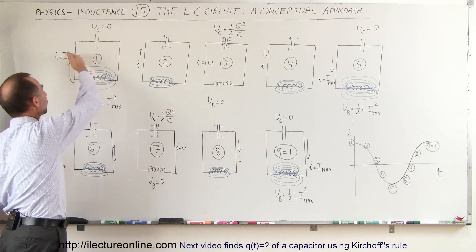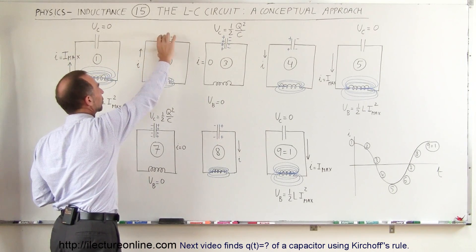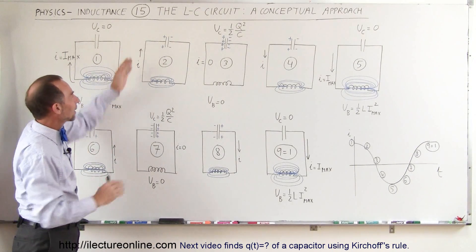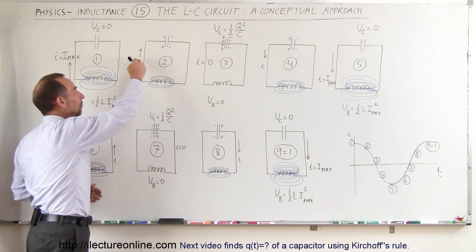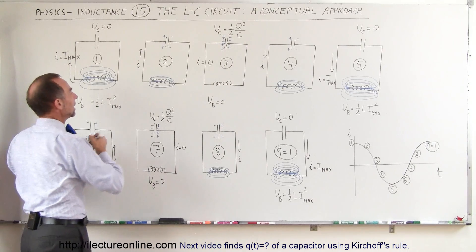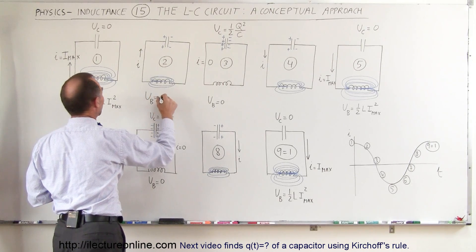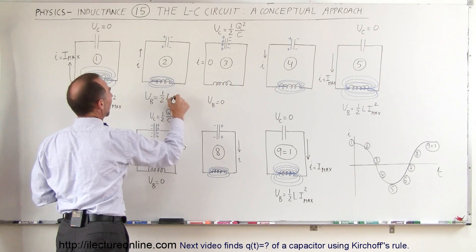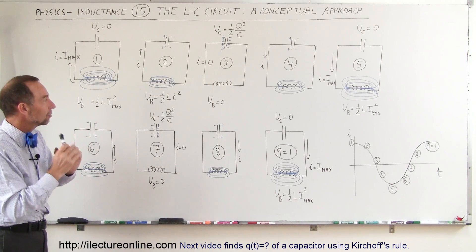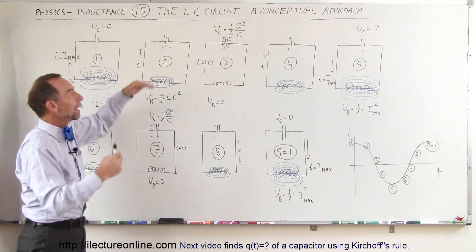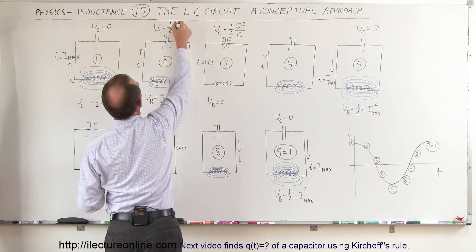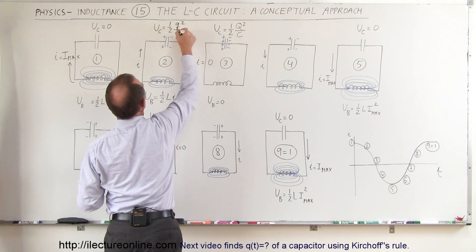As the current continues to flow, it begins to pile charges onto the capacitor. As the capacitor begins to build up with charge, it begins to push back on the current flow. The current becomes smaller, and because the current is smaller, the energy in the magnetic field is now one-half Li squared, where i is less than the maximum i. So the energy on the inductor begins to diminish and the energy on the capacitor begins to increase. The energy on the capacitor at that point will be equal to one-half times the charge squared divided by the capacitance.